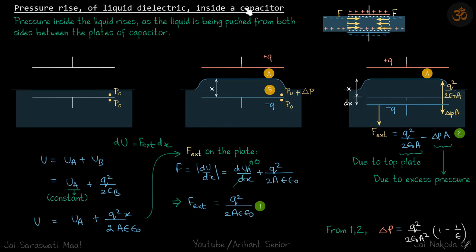We consider the pressure rise of liquid dielectric inside a capacitor. We have already seen that once you try to push a dielectric inside a capacitor it gets pulled inside, whether pushed from the left or right side. So if you submerge the capacitor in a liquid, the liquid acting as a dielectric gets pushed inside from both sides, giving rise to pressure between the plates. The liquid inside will have a higher pressure than the liquid at the same height outside.